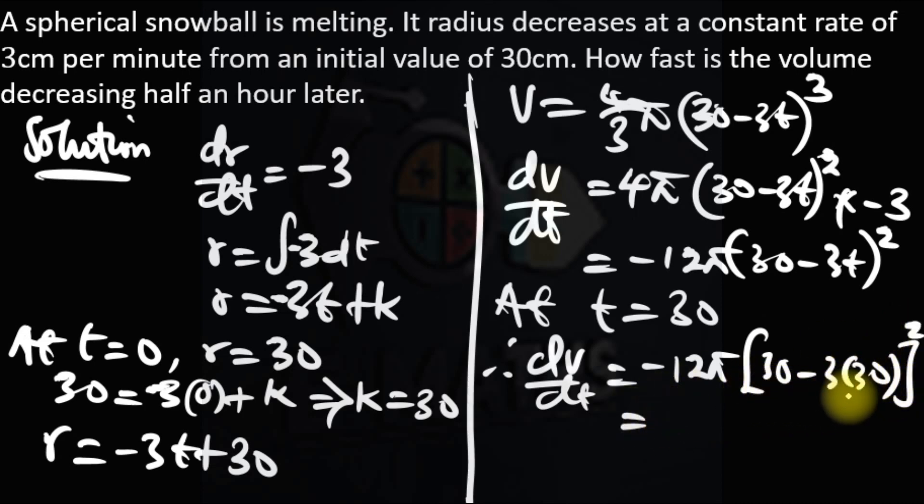30 minus 90 is minus 60. Minus 60 squared is 3600. And 3600 times 12 is 43200 pi. That's negative.